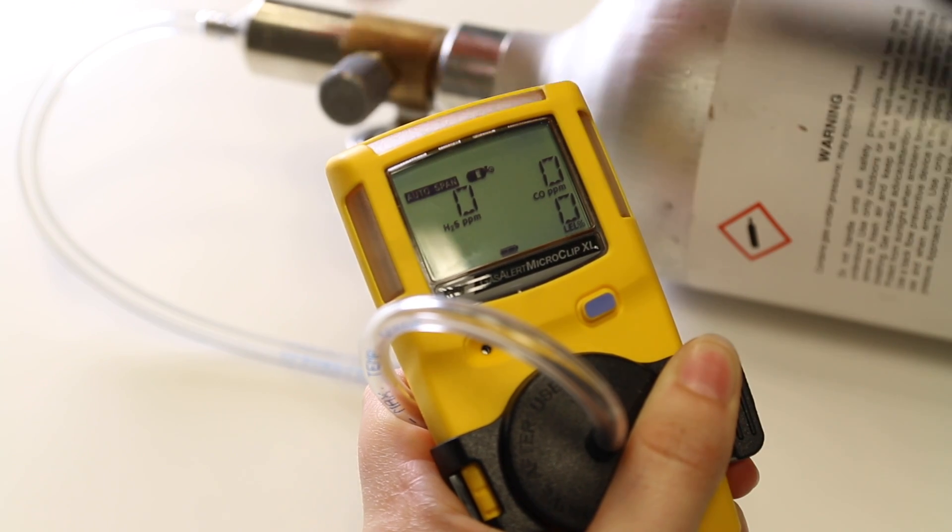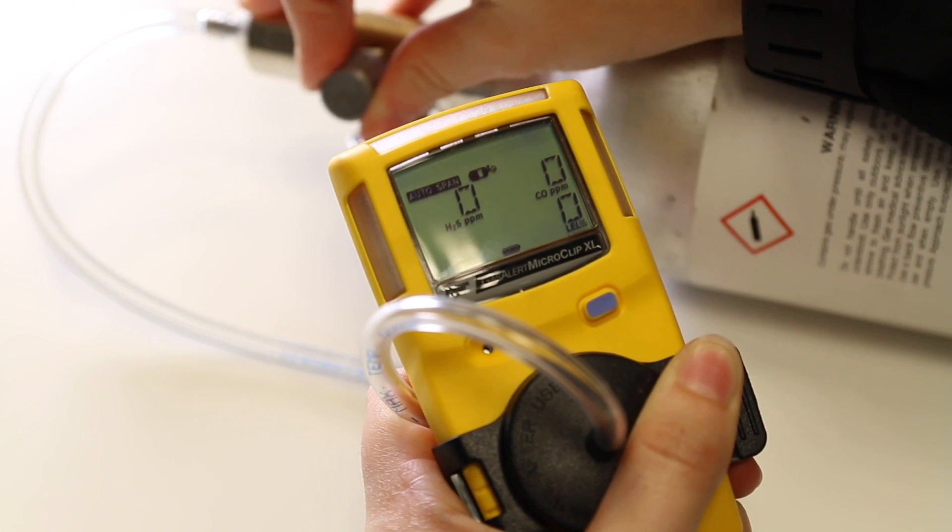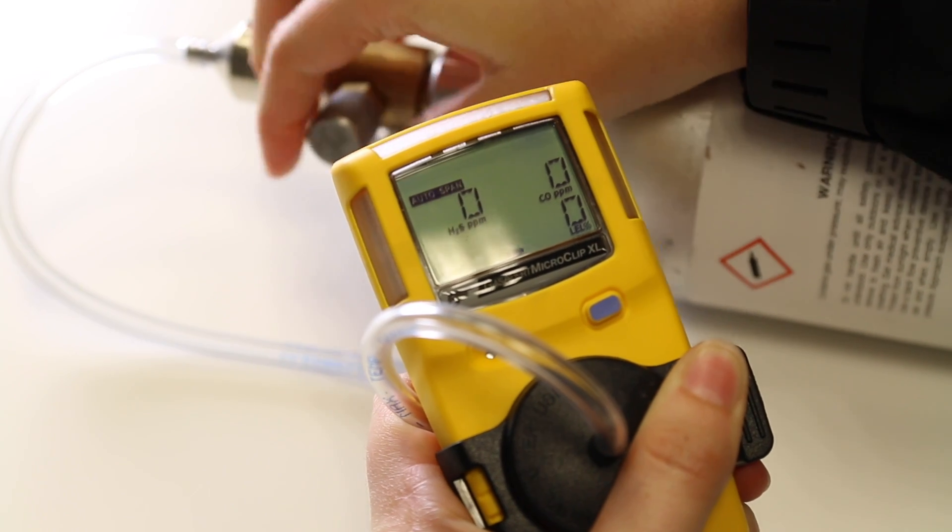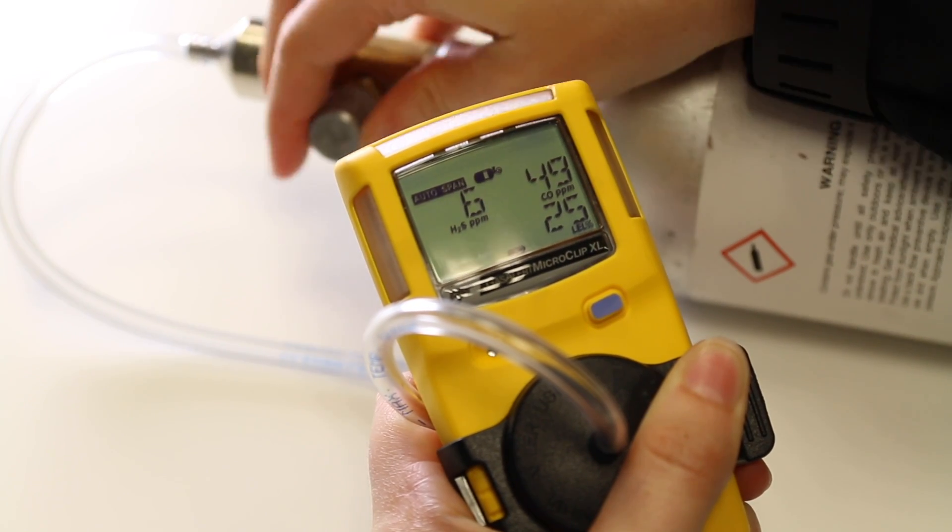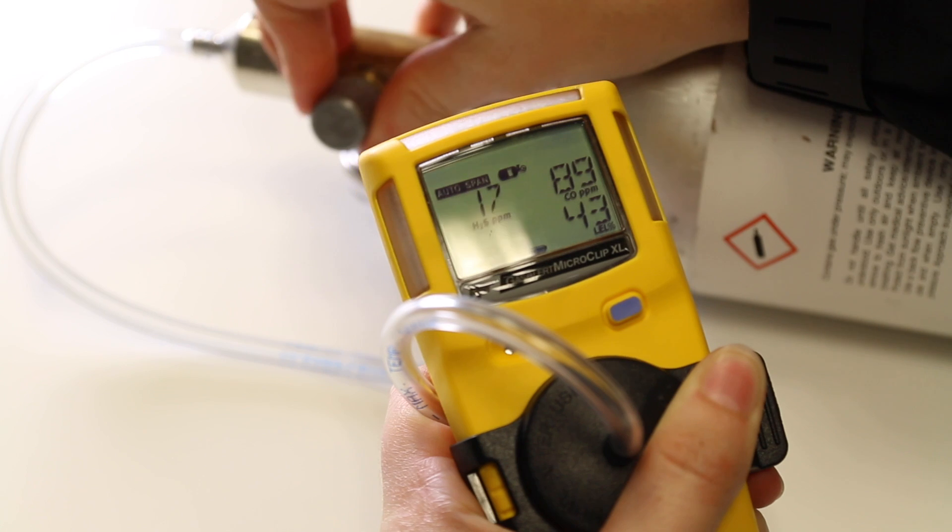If you haven't done so already connect the calibration cap to the unit along with the regulator, tubing and cylinder. Turn the regulator on and allow the gas to reach the sensors.